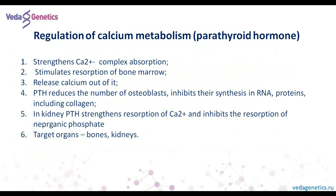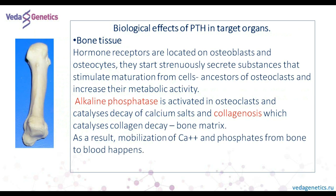Parathyroid hormone strengthens absorption of the calcium complex and stimulates resorption of bone tissue, liberating calcium from bone tissue. PTH lowers the number of osteoblasts and inhibits renal synthesis including collagen. PTH also increases resorption of inorganic phosphate. The target organs of parathyroid hormone are bones and kidneys. In bone tissue, parathyroid hormone influences maturation of cells and activates alkaline phosphatase, which is responsible for activation of dissolution of calcium salts and collagen. As a result, when this hormone increases its activity, it causes mobilization of calcium and phosphate from bones to blood.